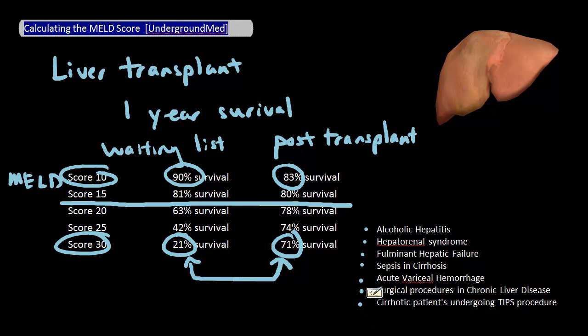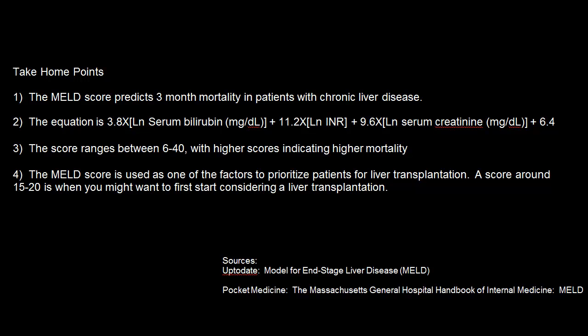Now, that's it for this one. Here are our take-home points. Number one, the MELD score predicts 3-month mortality in patients with chronic liver disease. Number two, the equation is as follows. Number three, the score ranges between 6 to 40, with higher scores indicating higher mortality. And lastly, the MELD score is used as one of the factors to prioritize patients for liver transplantation. A score around 15 to 20 is when you might want to first start considering a liver transplantation, and our sources are also listed here. Thank you for watching.